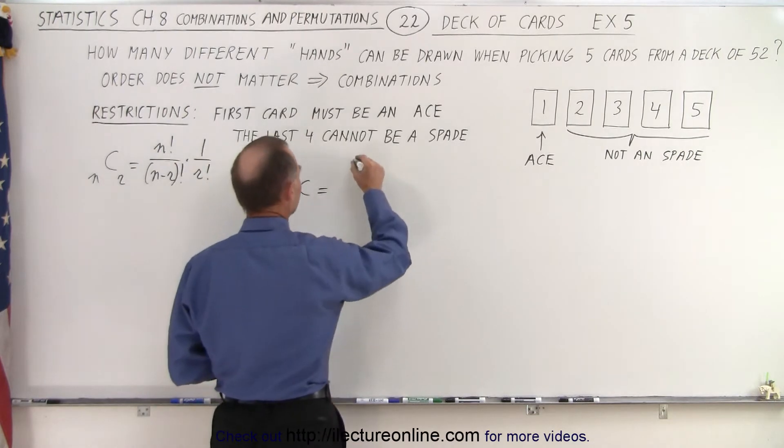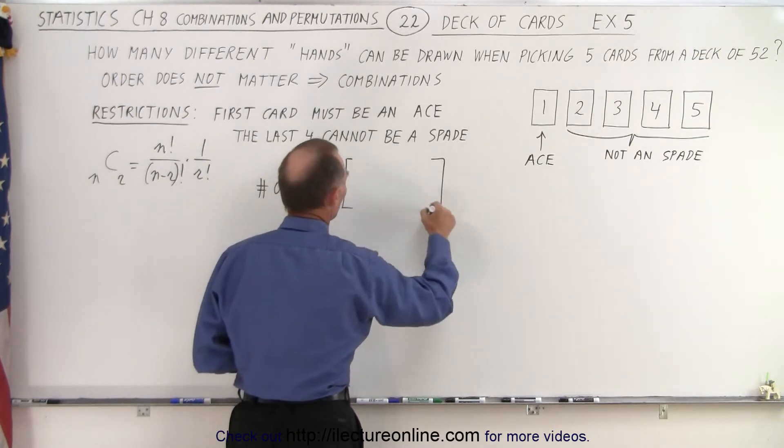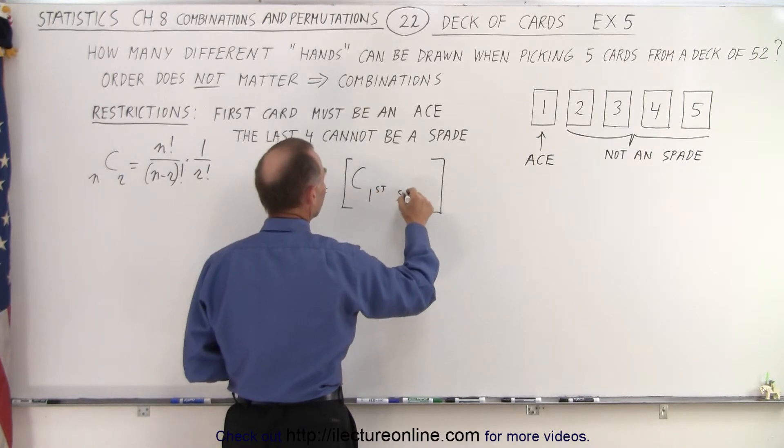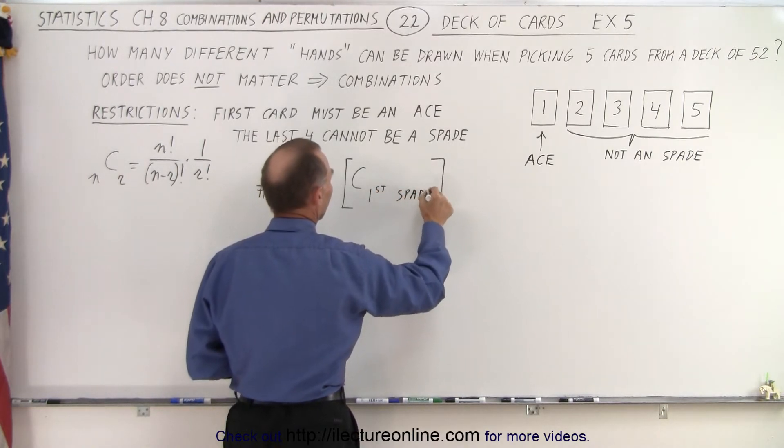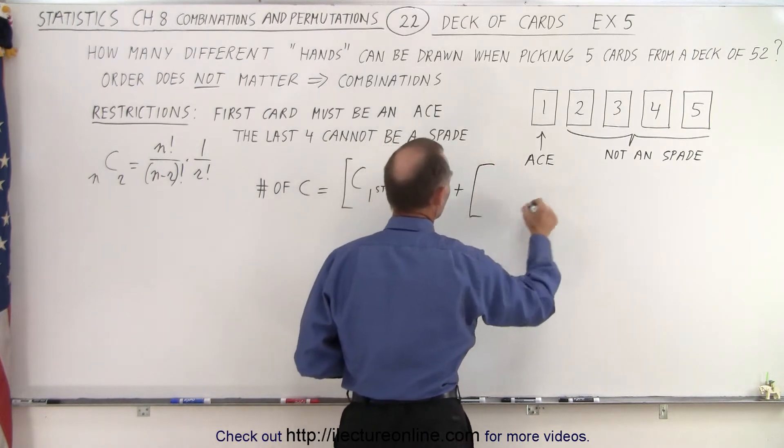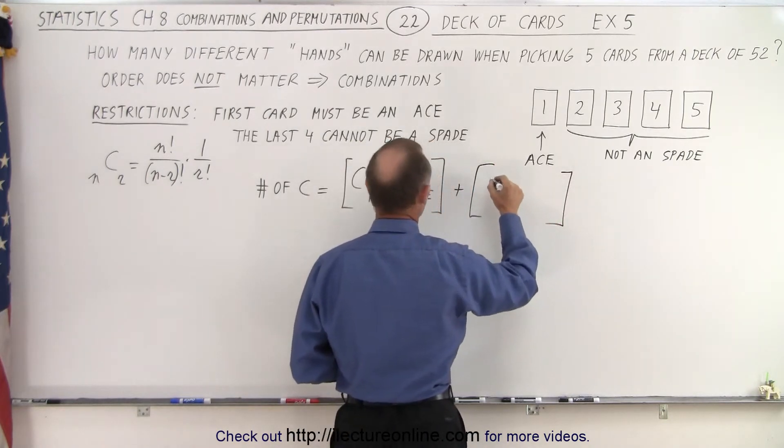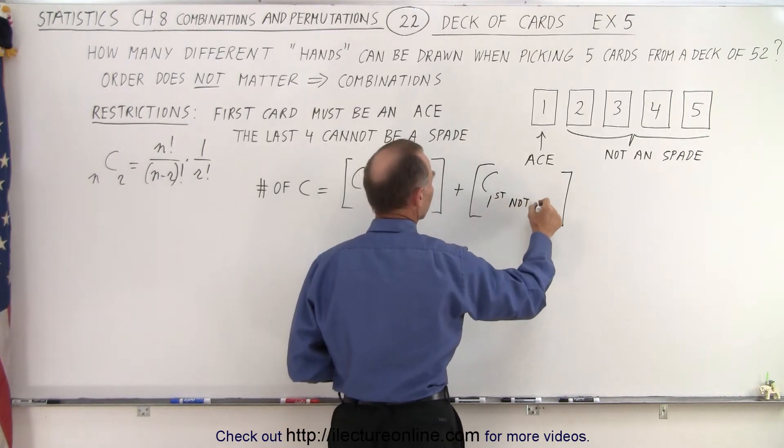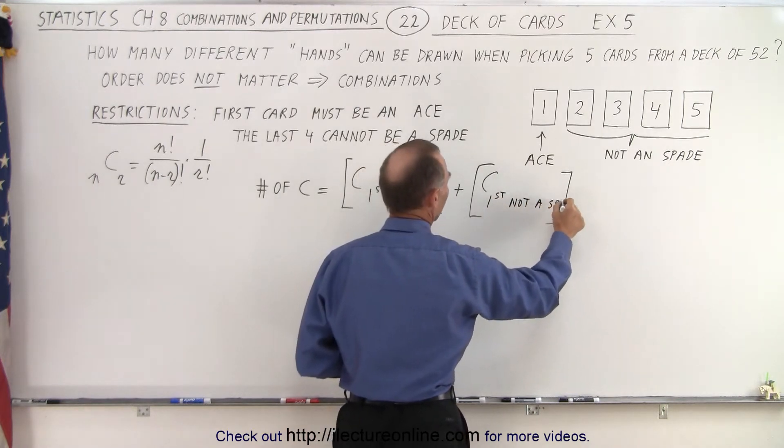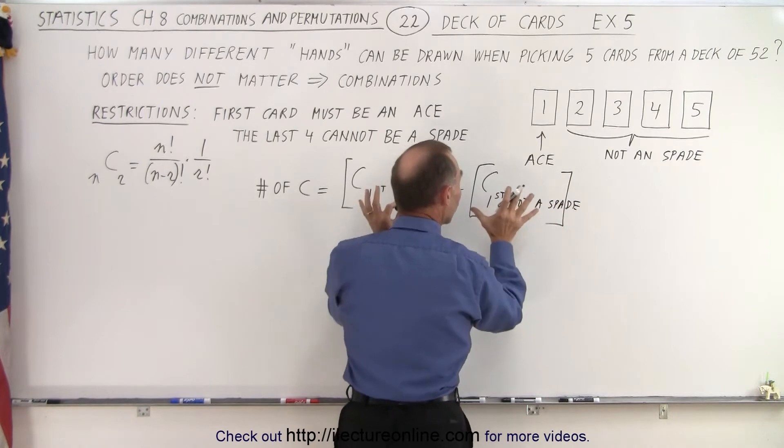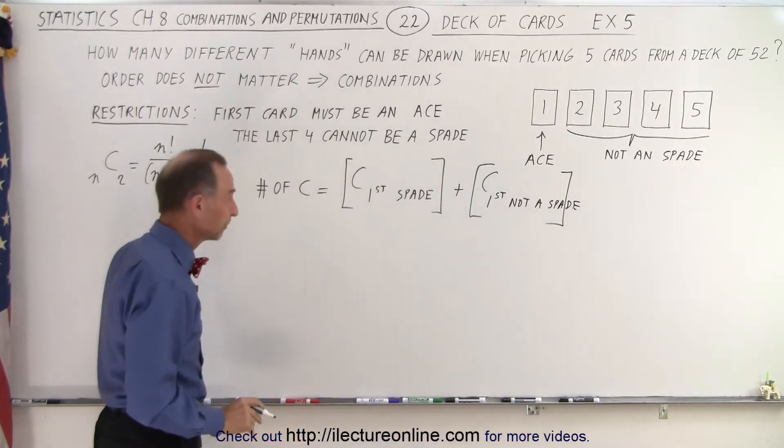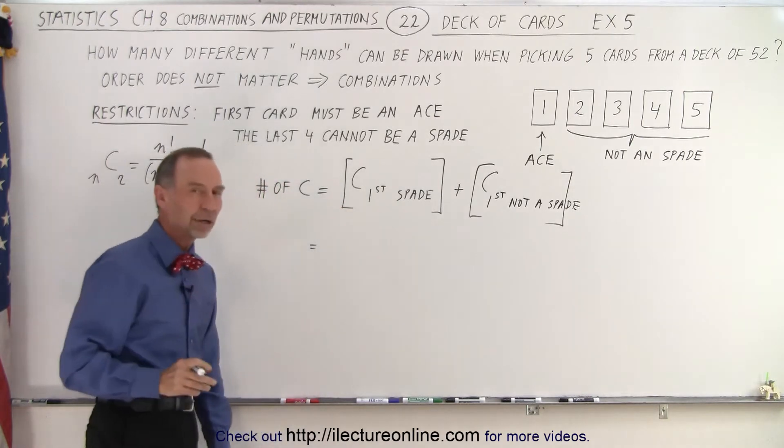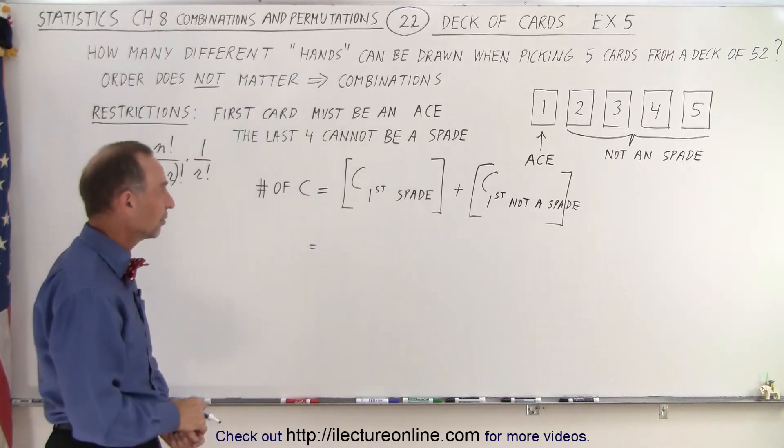What we're going to do is we're going to calculate the combination when the first card is a spade. And then we're going to add that to the combinations where the first card is not a spade. And yes, indeed, we'll have to add those two together. So this becomes equal to, let's say that the first card we draw is a spade, is the ace of spades.